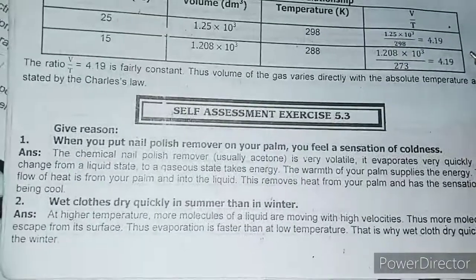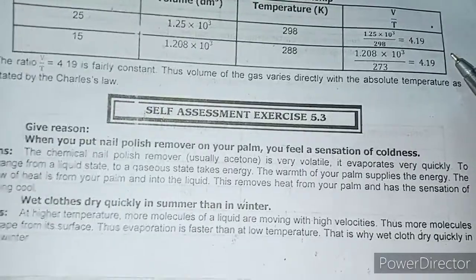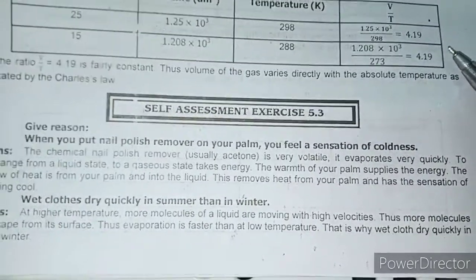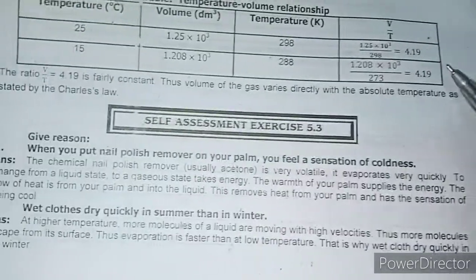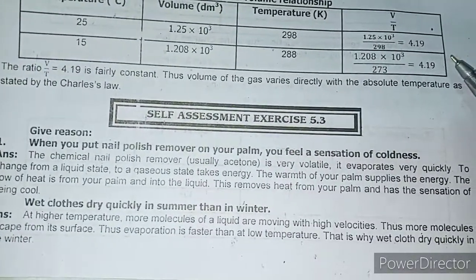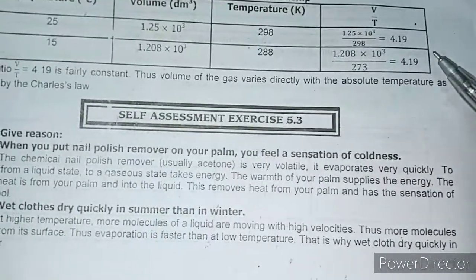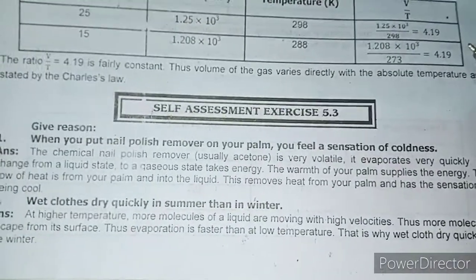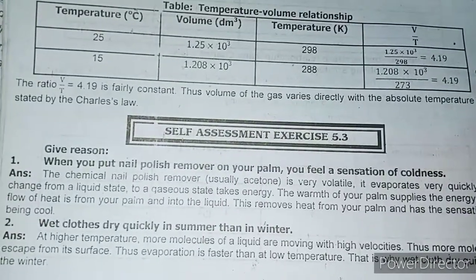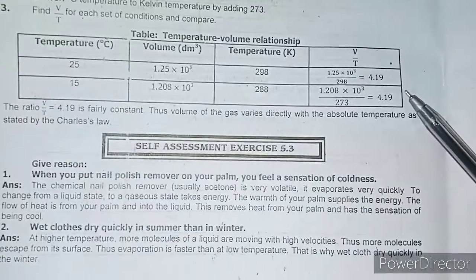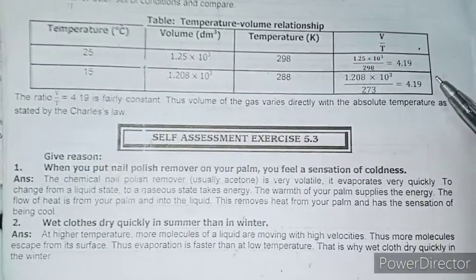वो इसलिए होता है कि the chemical in nail polish remover is acetone. It's very volatile — volatile का मतलब है कि वो बहुत जल्दी evaporate हो जाता है। It evaporates very quickly. To change from a liquid state to a gaseous state takes energy. The warmth of your palm supplies the energy — आपके हाथ की गर्मी उसको energy देती है। The flow of heat is from your palm into the liquid; this removes heat from your palm and creates a sensation of being cool.